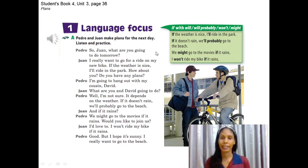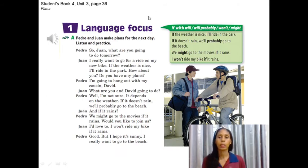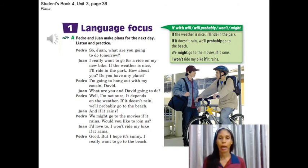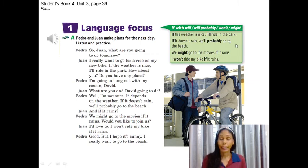The first conditional: one event depends on a condition. For example, I want to have a barbecue this weekend, but it depends on the weather. 'If the weather is nice, I will ride in the park.' 'If it doesn't rain, we will probably go to the beach.' 'We might go to the movies if it rains.' 'We won't ride bikes if it rains.' Everything depends on a condition — one thing depends on another.